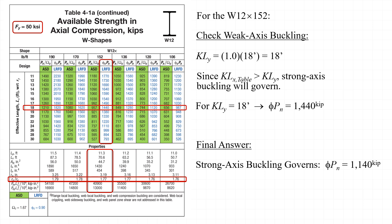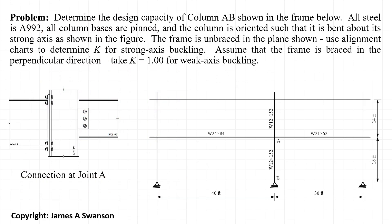The final answer is that strong axis buckling governs and the available strength of the W12x152 in Grade 50 steel is 1140 kips. In summary, the effective length factor k_x associated with strong axis buckling of column AB is 2.30, and the available strength φP_n of column AB is 1140 kips.